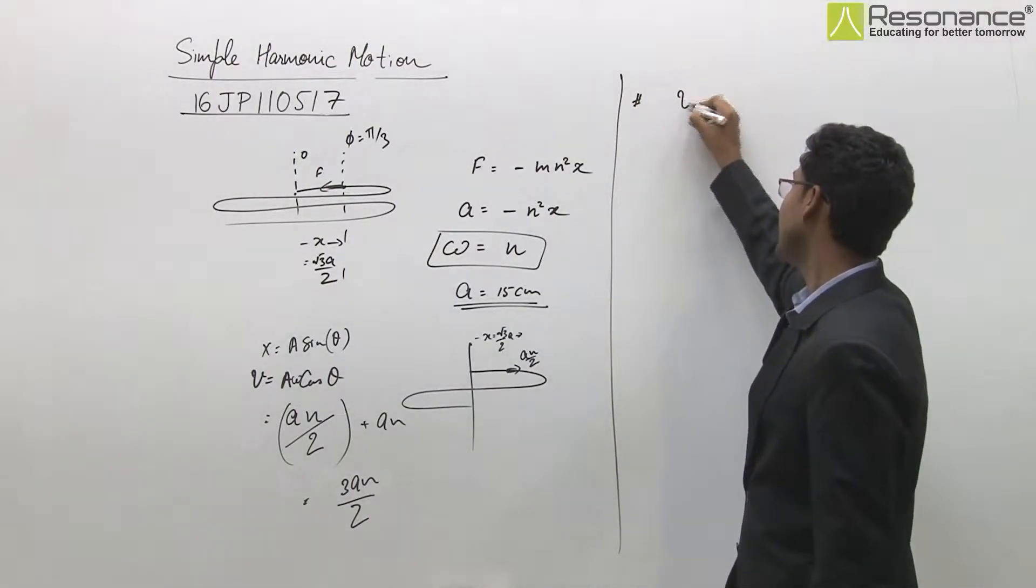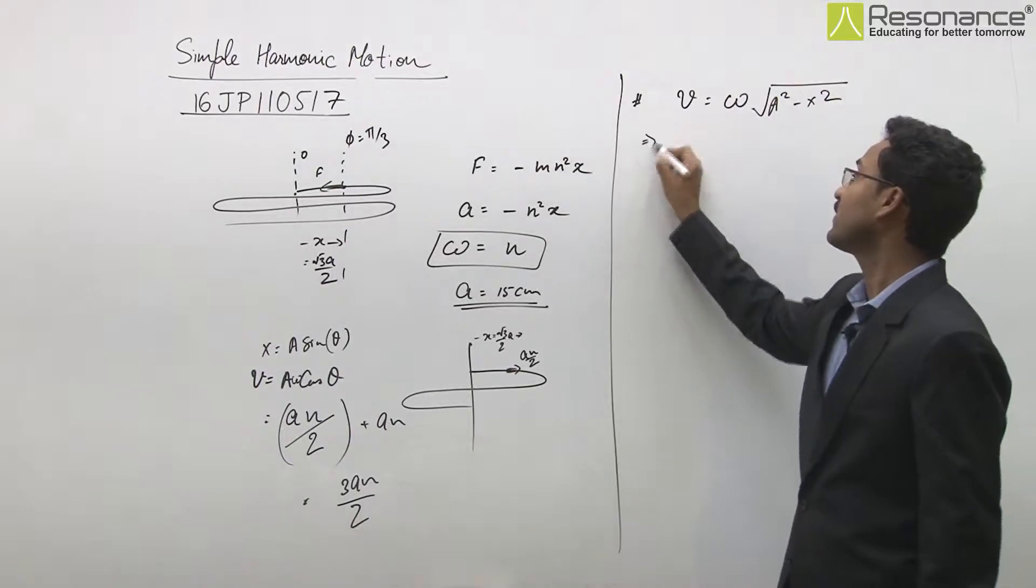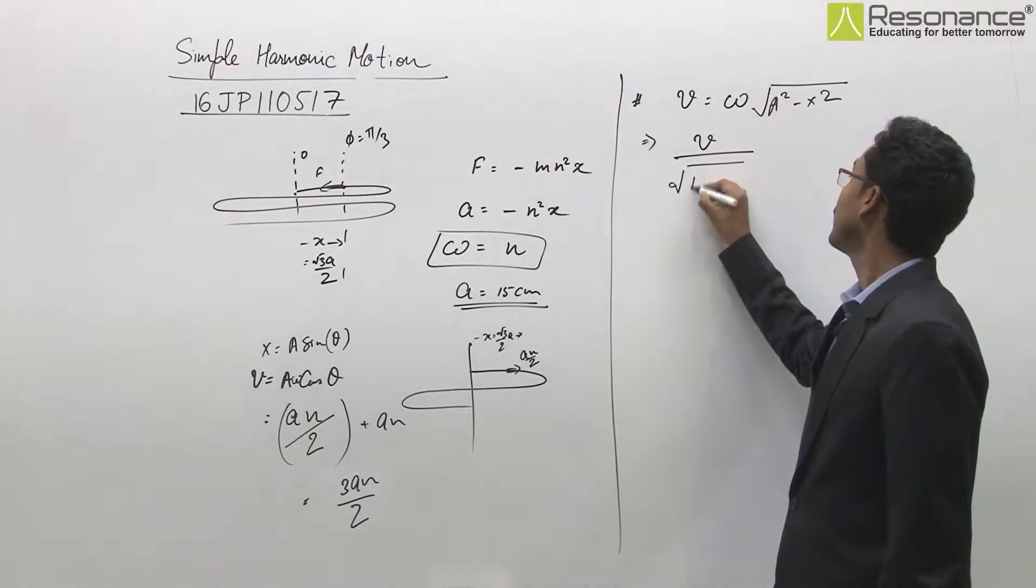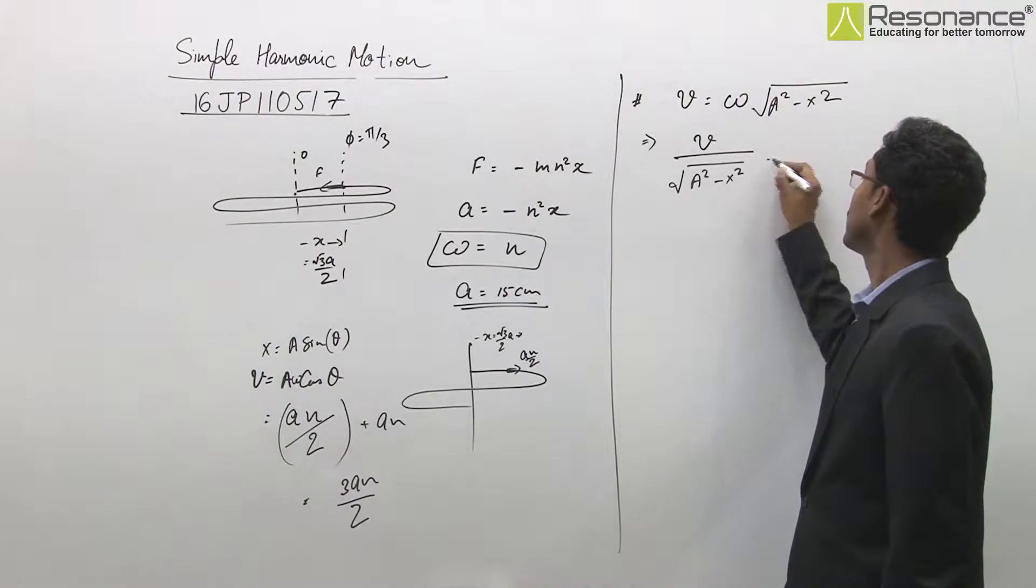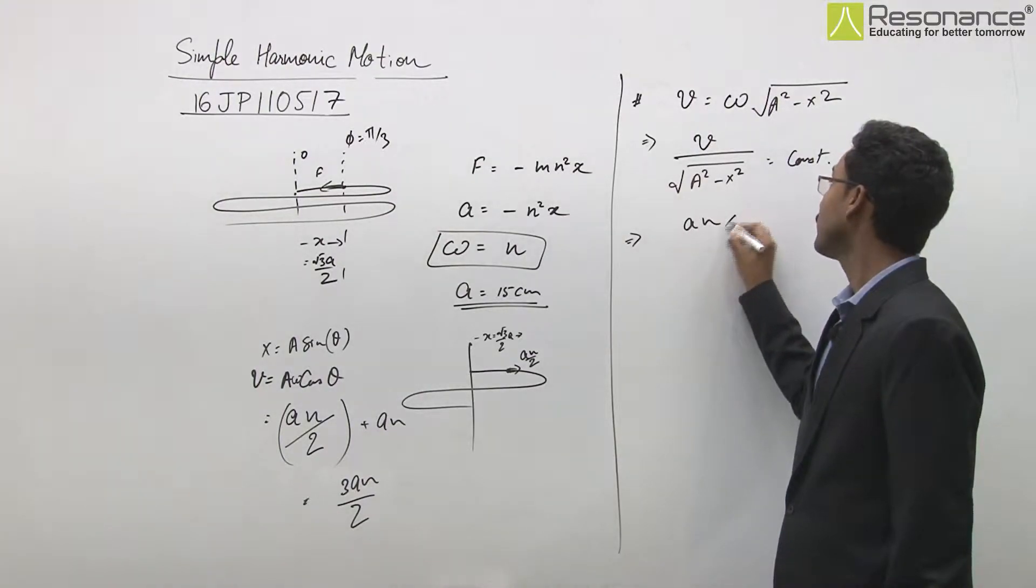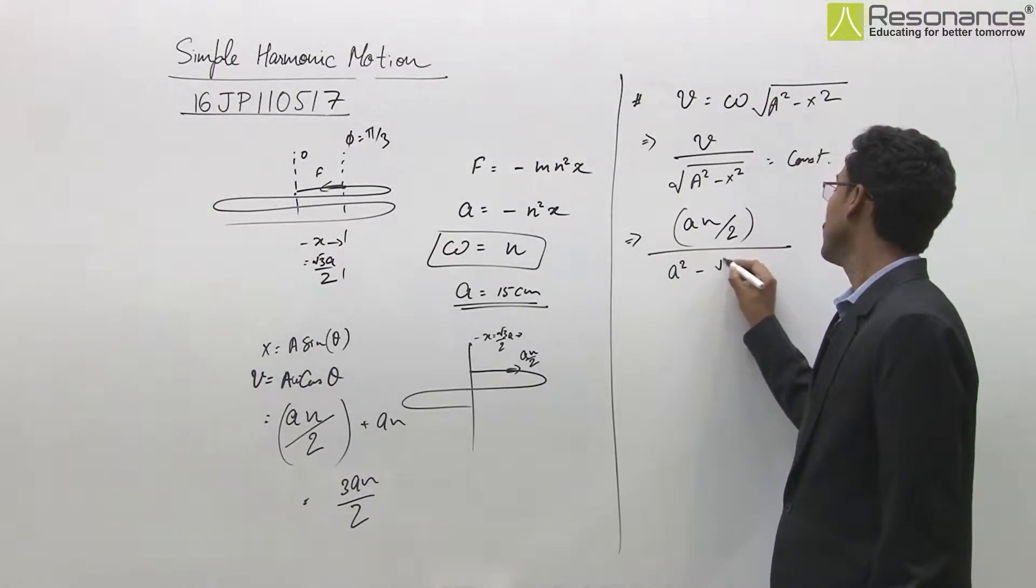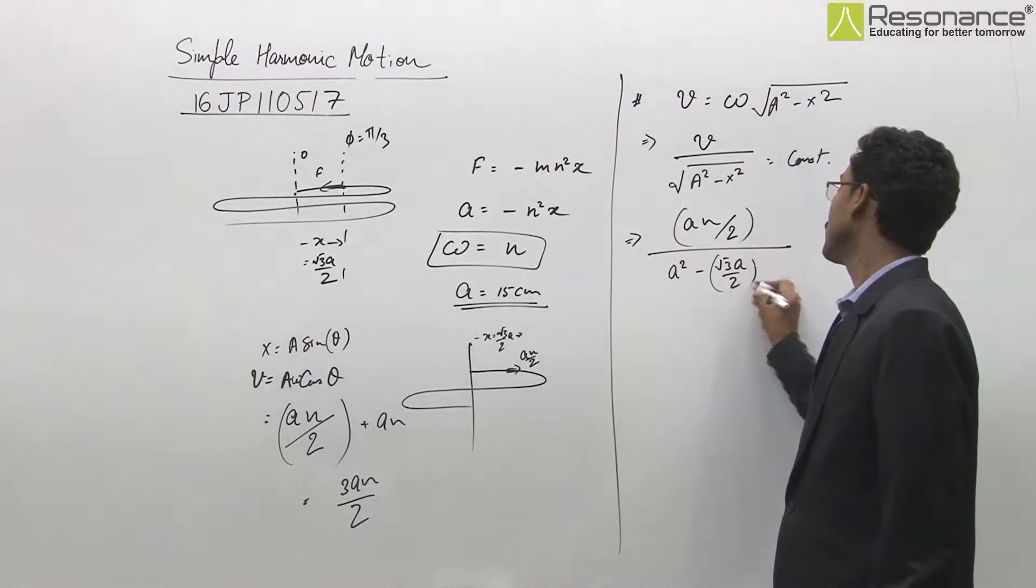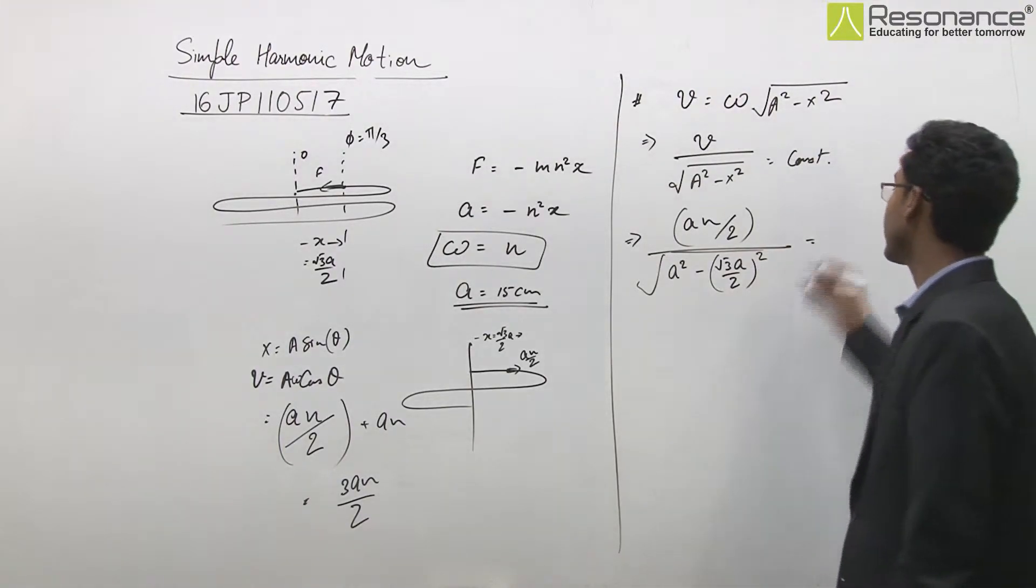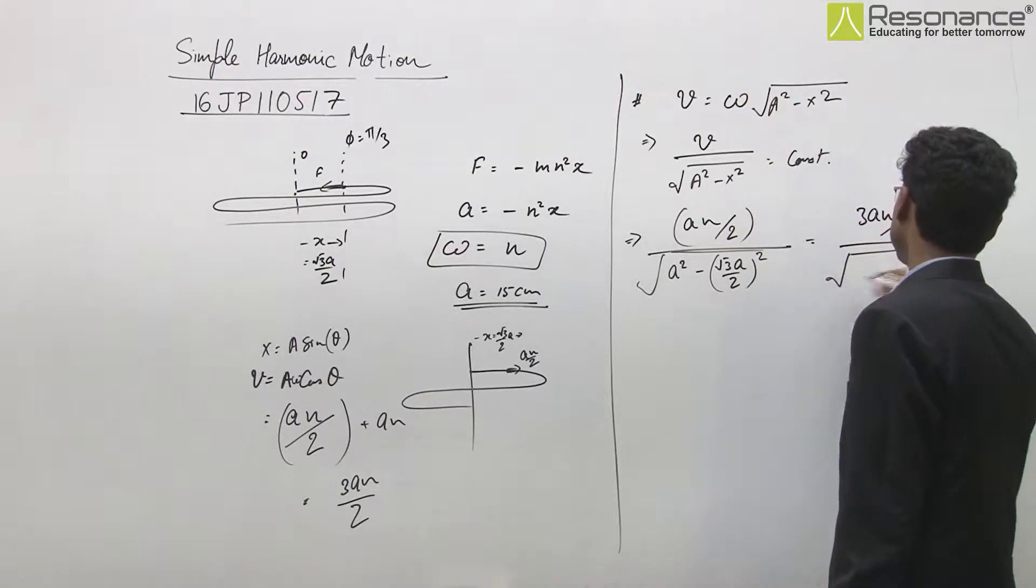We have v = ω√(a² - x²), and we know that frequency doesn't change, angular frequency remains same. This means we can treat ω as constant. Initial velocity is an/2, initially amplitude is a with position √3a/2. After hitting, position x value is unchanged but new velocity is 3an/2 and new amplitude is a', suppose.